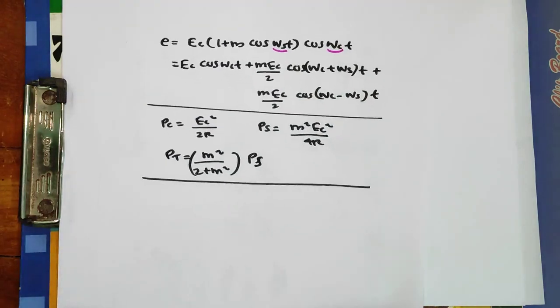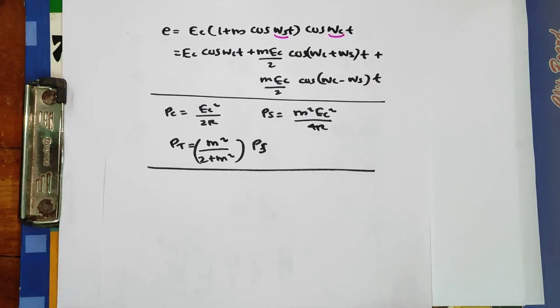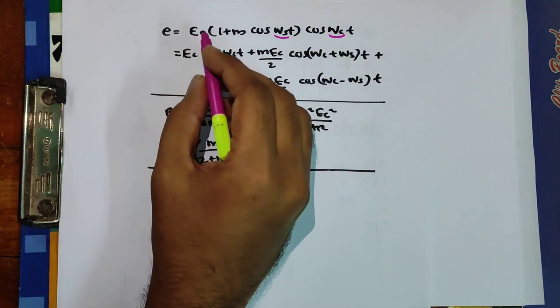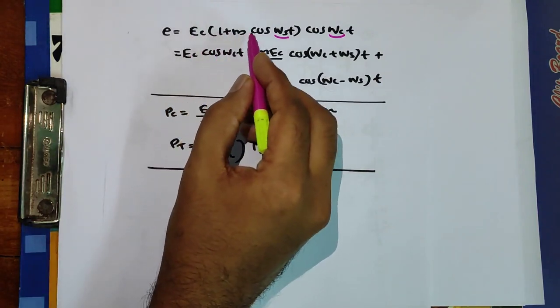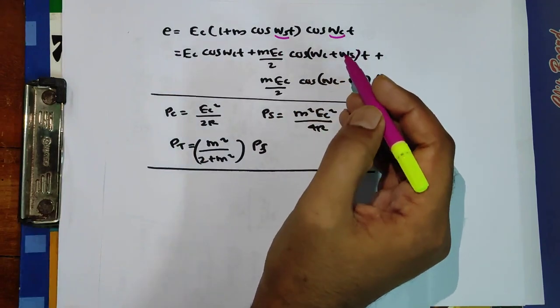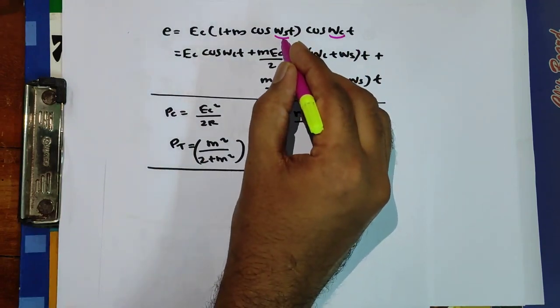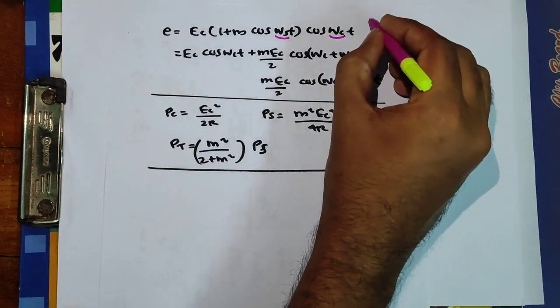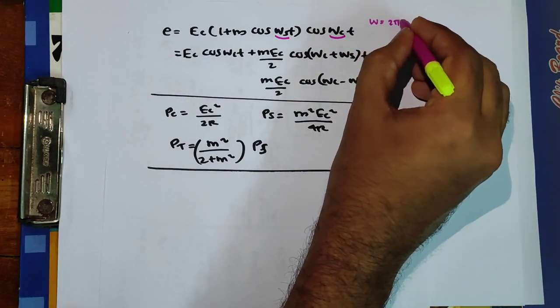Before solving the problems, let us discuss the various formulas. The instantaneous voltage of the carrier wave is given by E = Ec(1 + m·cos(ωs·t))·cos(ωc·t), where ωs is the signal angular frequency and ωc is the carrier frequency. And omega is equal to 2πf.